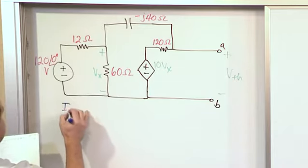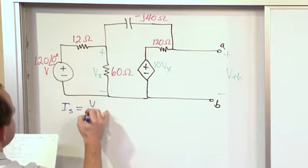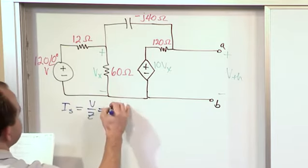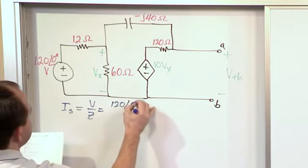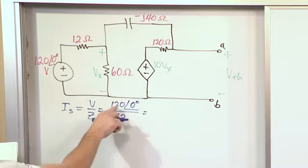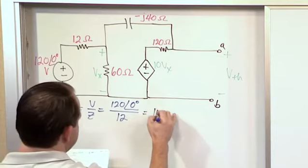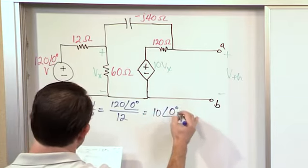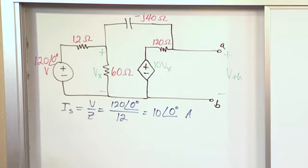So the new source, I sub s, is going to be V over Z, where V is its voltage, 120 at an angle of 0 degrees, over 12. So you see the numbers are nice too for that. And so what you get is 10 at an angle of 0 degrees, and this is amps.